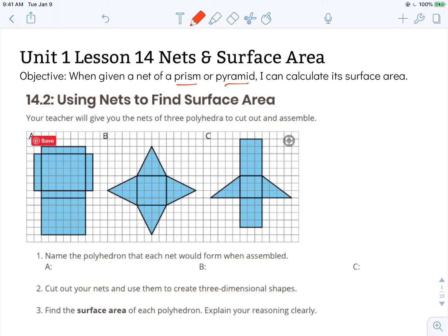So we're looking at 14.2 using nets to find surface area. This says your teacher will give you the nets of three polyhedra to cut out and assemble. I'm not going to cut these out and assemble, obviously, from the screen. Name the polyhedron that each net would be when assembled.